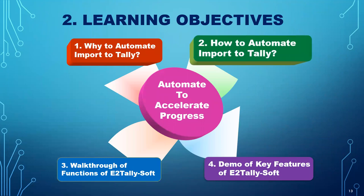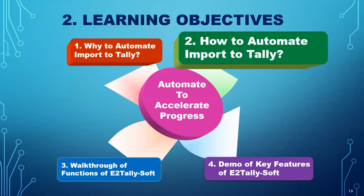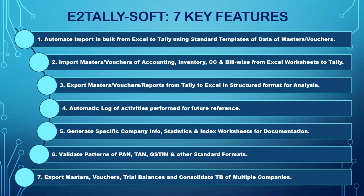Now let's look at the second objective — how to automate. These are the seven key features: automate import in bulk from Excel to Tally using standard templates of masters or vouchers; import masters or vouchers — accounting, inventory, cost centers, and bill-wise — from Excel worksheets to Tally; export masters and vouchers reports from Tally to Excel in a structured format for further analysis; maintain an automatic log of all activities; generate specific company info, statistics, and index sheets for documentation; validate patterns of PAN, TAN, GSTN, and other standard formats; and consolidate trial balance of multiple companies.